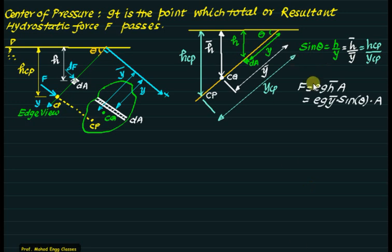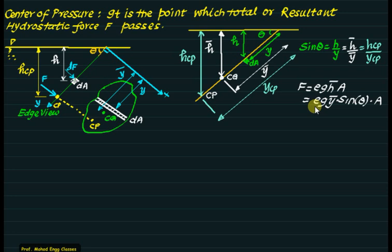From the first part, we proved that force F = rho × g × h-bar × A. Replacing h-bar with y-bar × sin(theta), the total hydrostatic force becomes F = rho × g × y-bar × sin(theta) × A, where theta is the angle made by the edge view with the free surface.